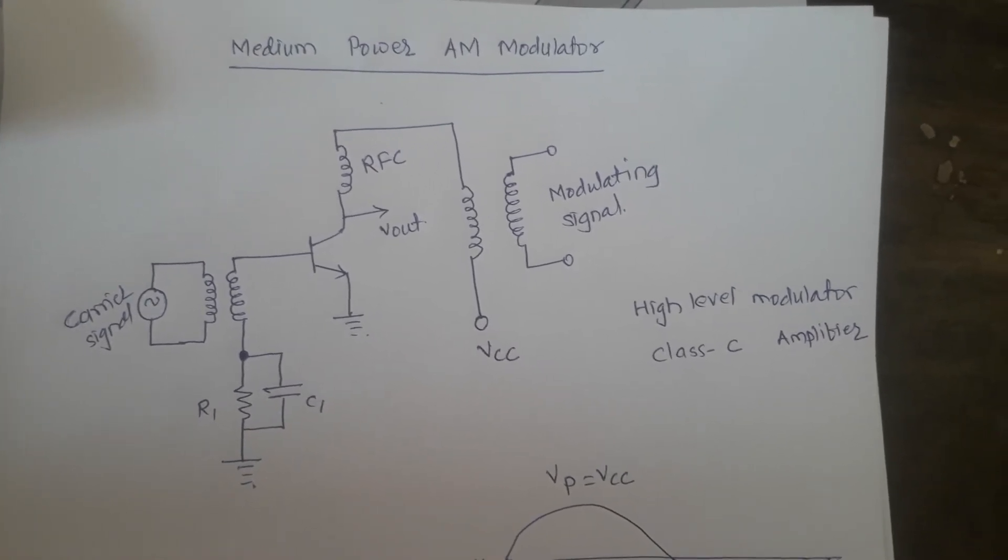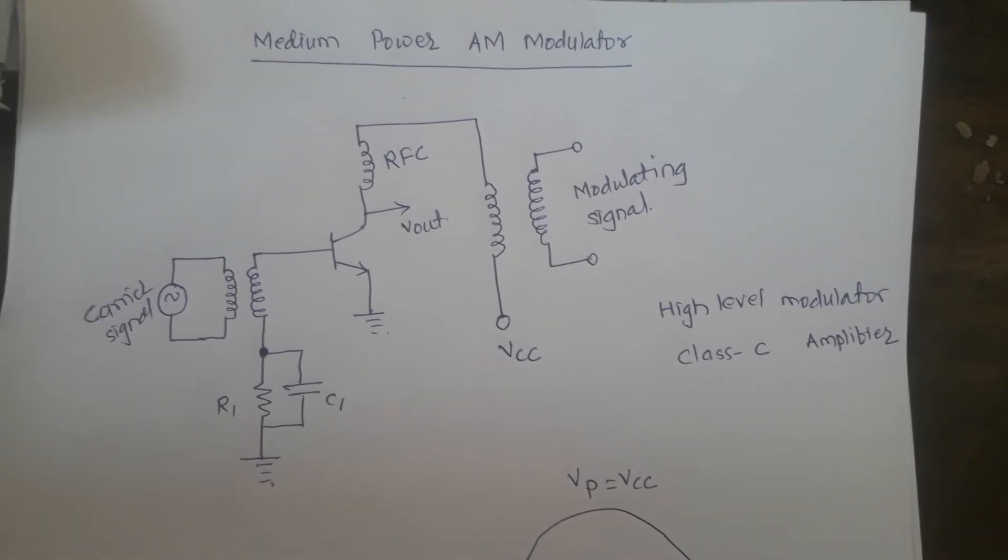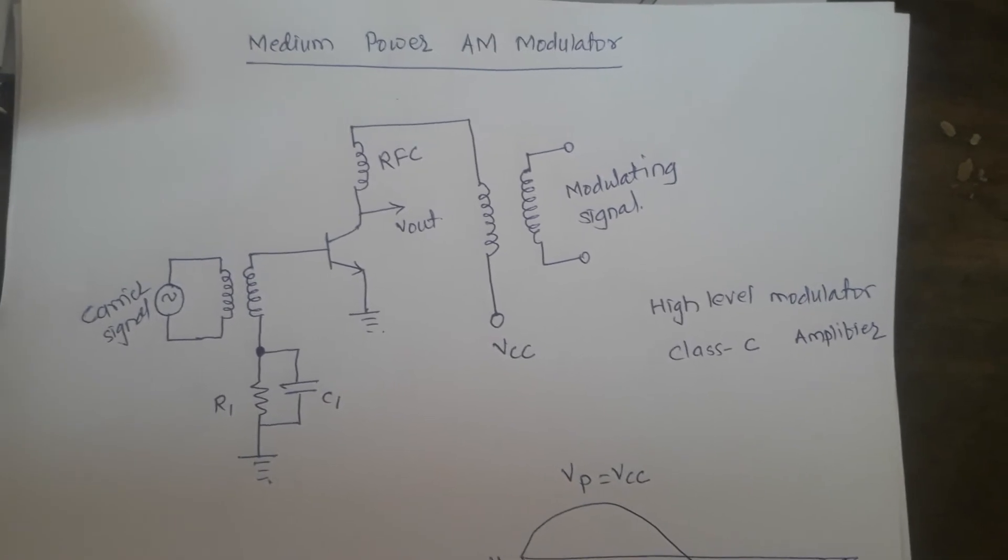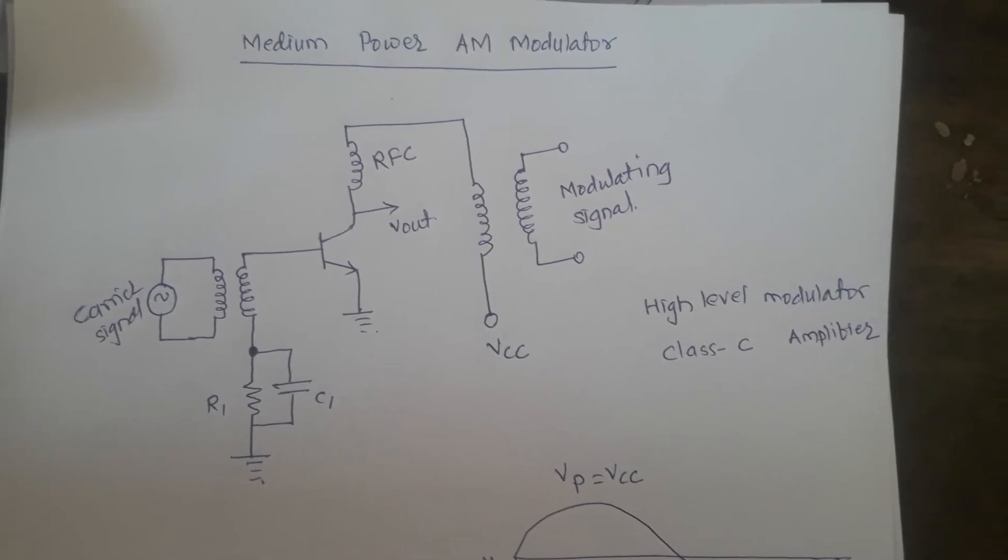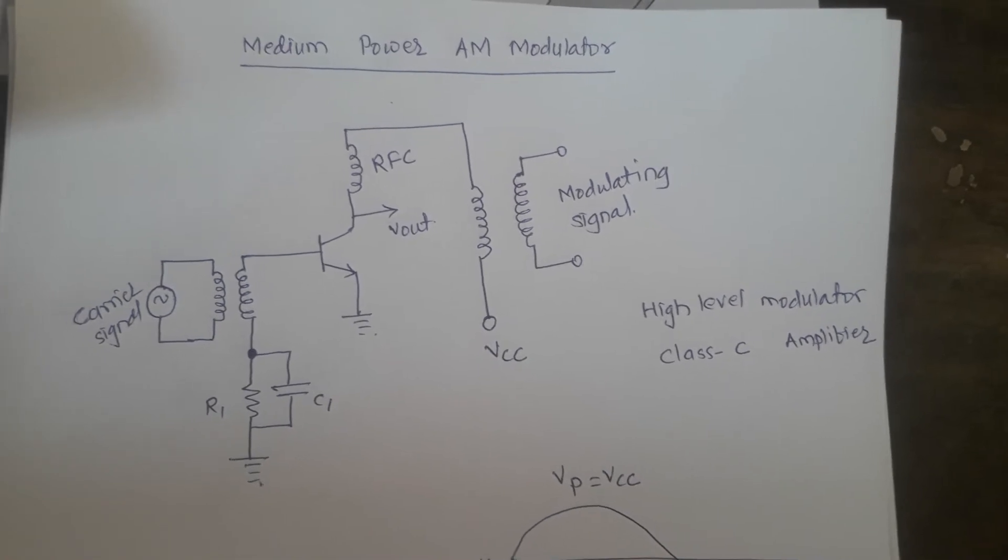This is an output stage acting as an output stage for the transmitter. In this particular circuit, this circuit acts as a class C amplifier and it amplifies as well as modulates the signal.